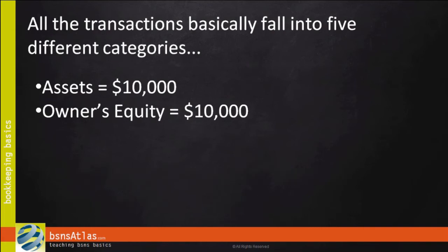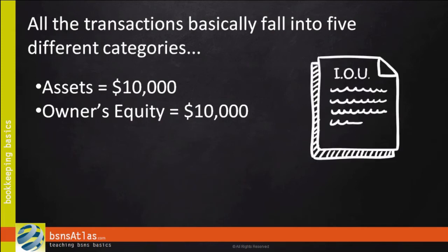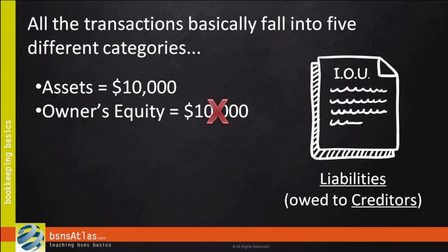However, if the business owes anyone anything, we can't say that the owner owns all $10,000 of the business. At some point, we're going to have to take some of our assets, usually cash, and pay off those debts that we owe. Those amounts that we owe to other people or other companies are called liabilities. And the people or the companies that we owe it to are called creditors.